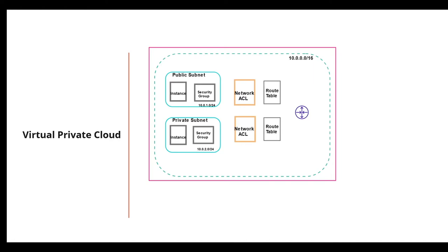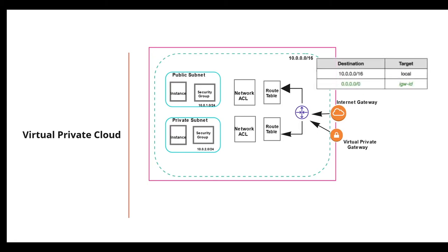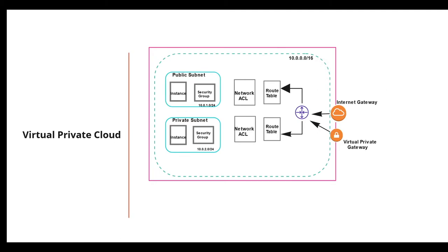You can associate multiple subnets with the same route table. Each VPC also has a Virtual Private Gateway, which is the gateway to your VPC — you can use it to connect your VPC to your data center via SSL VPN. The Internet Gateway is a logical connection between your VPC and the internet. It allows resources within your VPC to access the internet and vice versa, but there must be a routing table entry allowing a subnet to access the internet gateway.